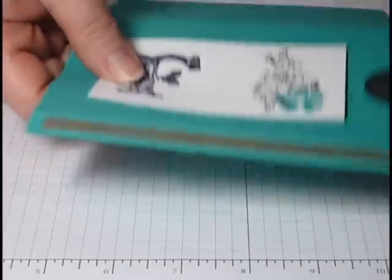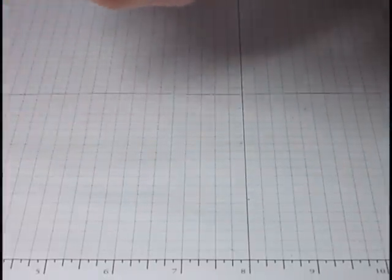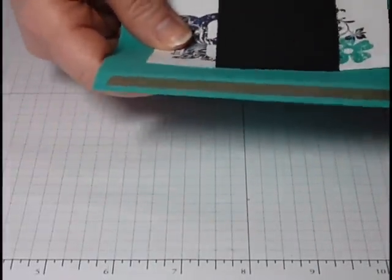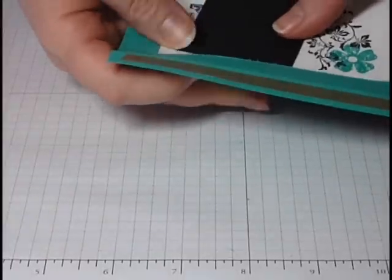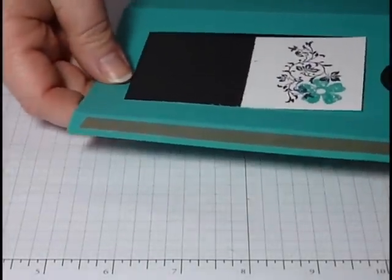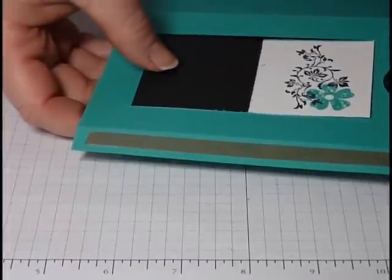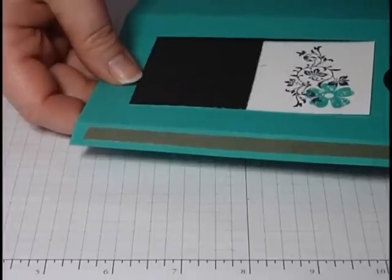Next, we want to insert this piece of paper that's going to actually hide part of our slider. So you'll just put it in through the cut lines and give it a try. Make sure that it's centered in the circle, that it's covering your images, and that it moves freely.